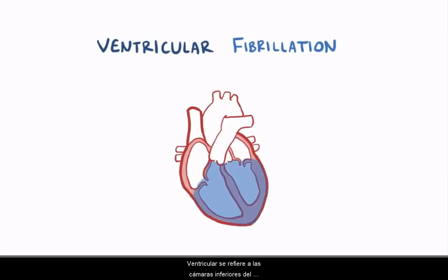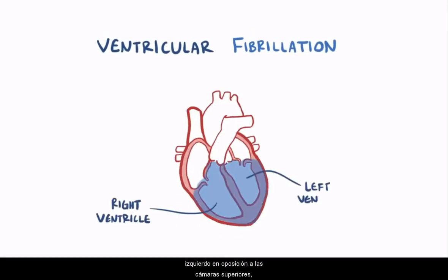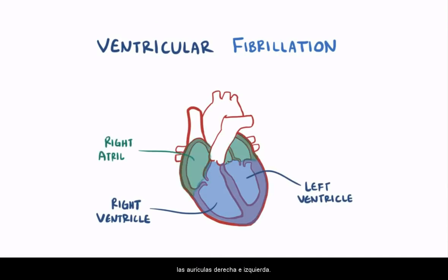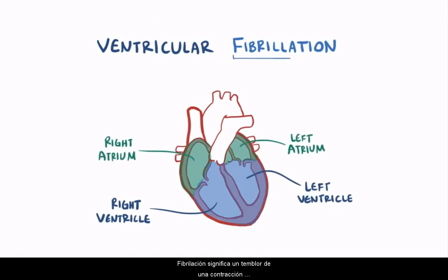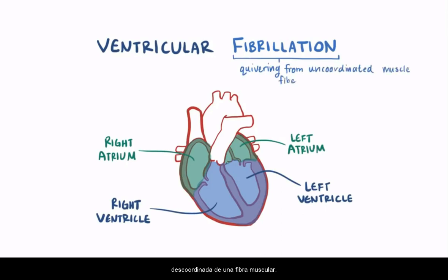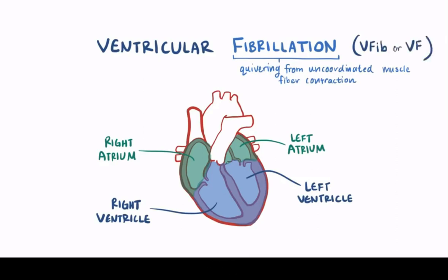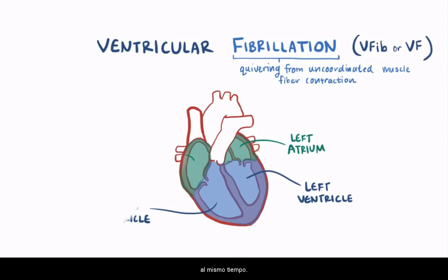Ventricular refers to the bottom chambers of the heart, the right and left ventricles, as opposed to the top chambers, the right and left atria. Fibrillation means quivering from uncoordinated muscle fiber contraction. So ventricular fibrillation, or sometimes V-fib or VF, means the heart's muscle fibers start quivering because they're not contracting at the same time.